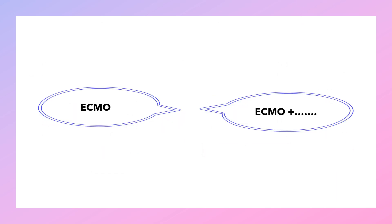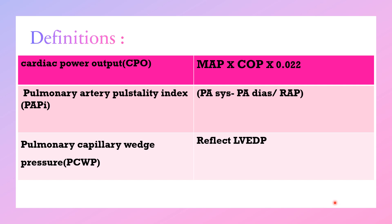So now we will go for ECMO or ECMO plus to unload the heart. Before going to the lecture, I will put some important definitions I will use. Cardiac power output means mean arterial blood pressure multiplied by cardiac output with a constant of 0.022.